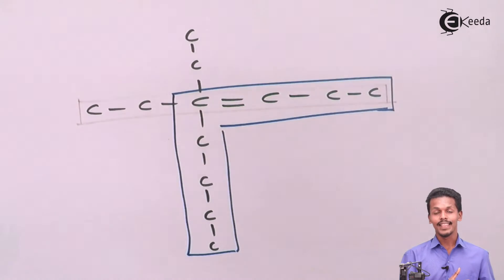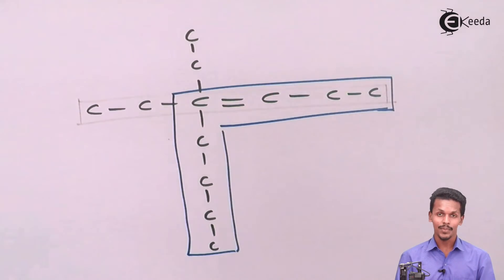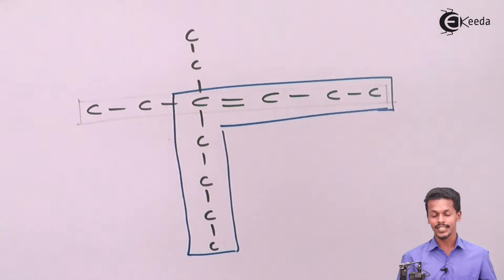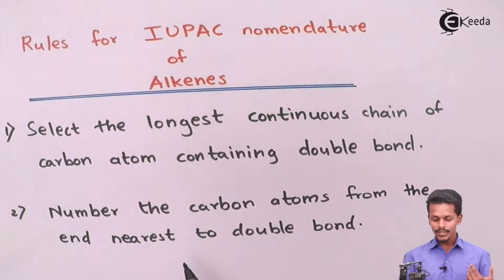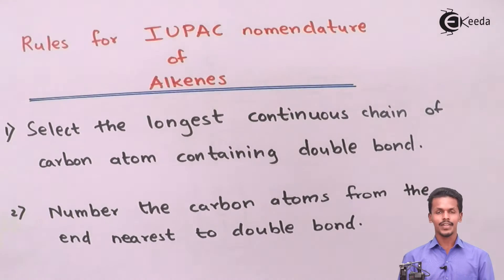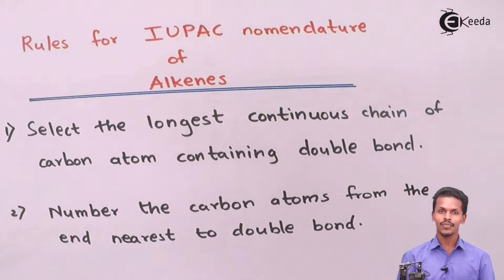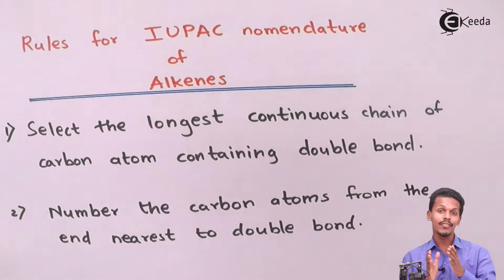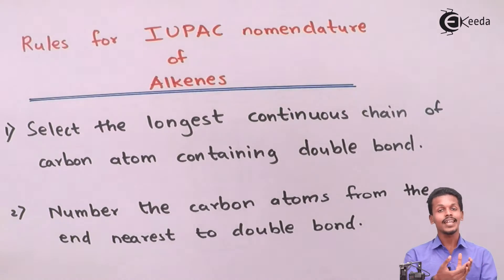We have studied that we should consider only the longest carbon chain which consists of a carbon-carbon double bond when it comes to alkene. Now let us move on to the second point: we have to number the carbon atoms from the end nearest to the double bond. In alkane we number so that the branching gets the lowest number, but in alkene we consider the double bond — if it is close to one end, we number from that end so the double bond gets the least number.